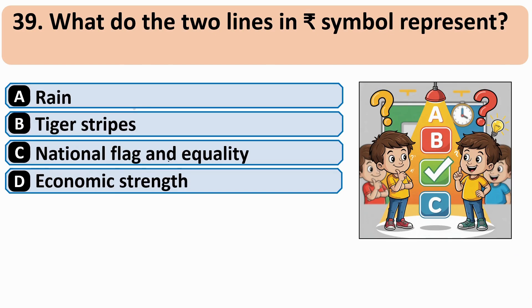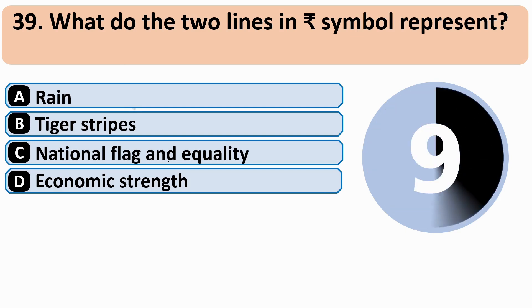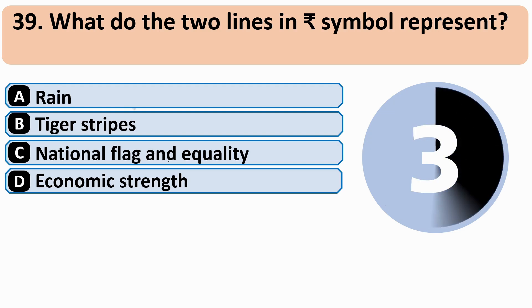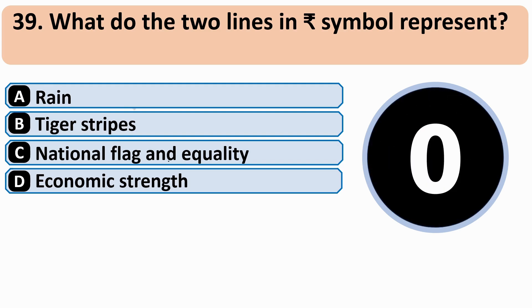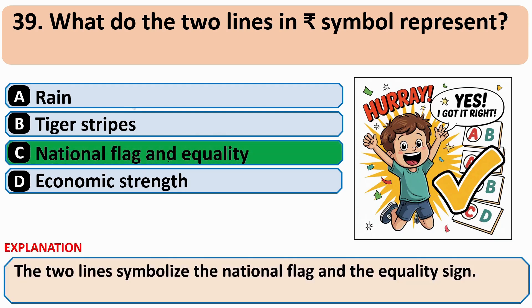What do the two lines in the Rupee symbol represent? The correct answer is C — the National Flag and equality.